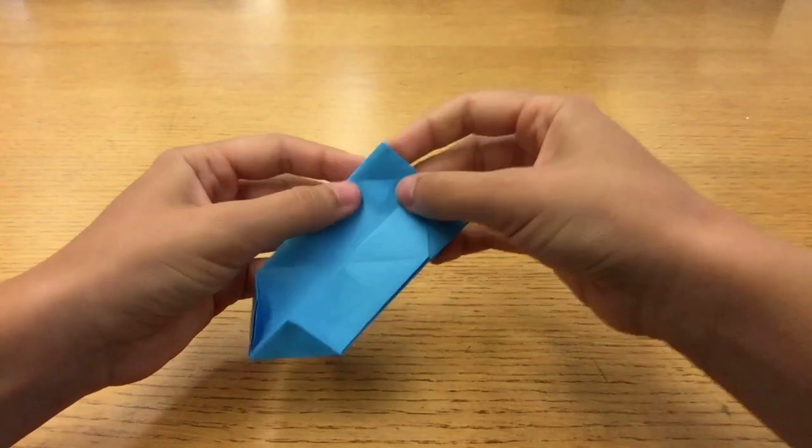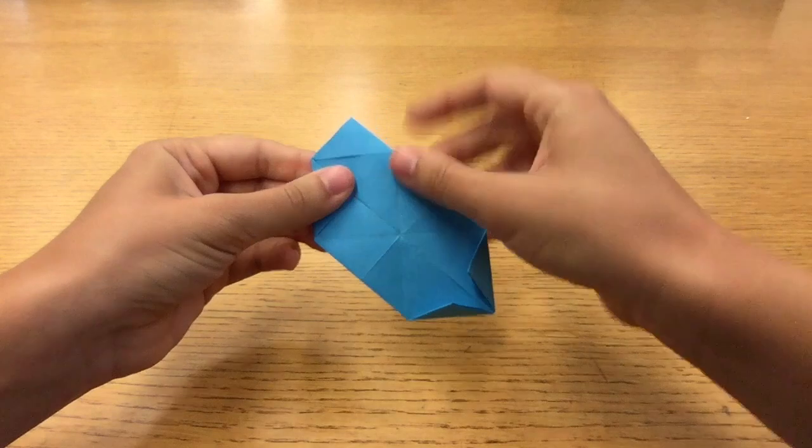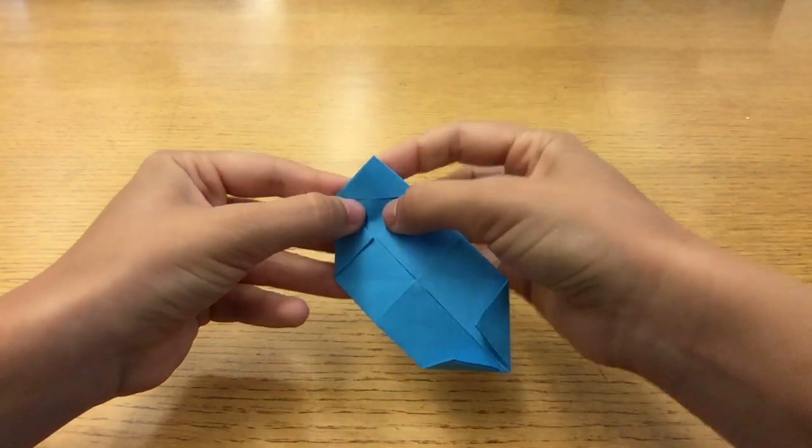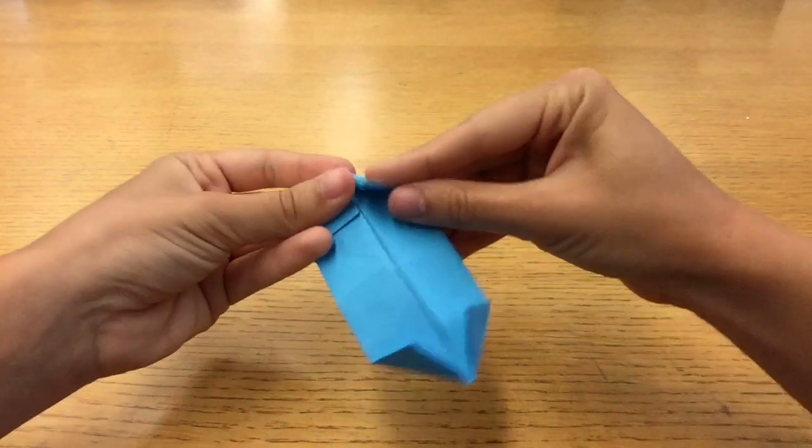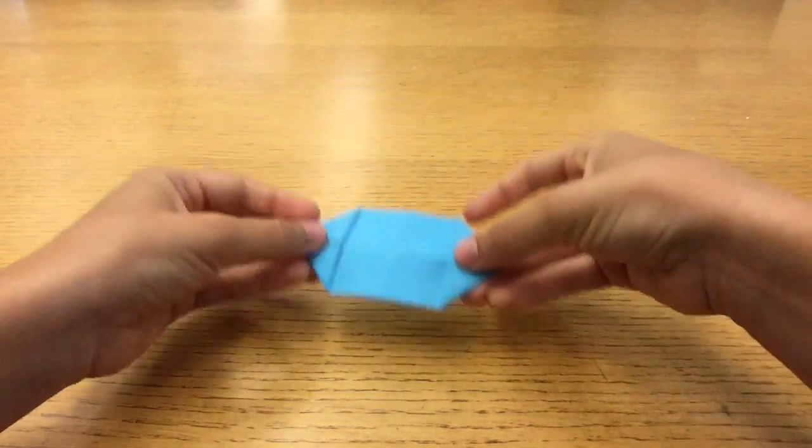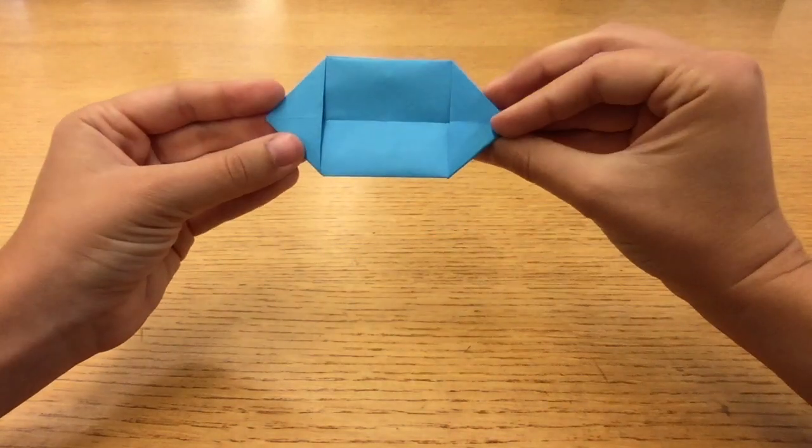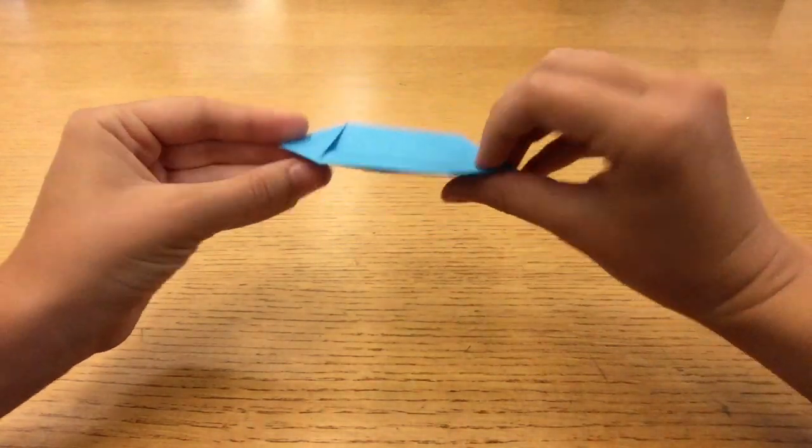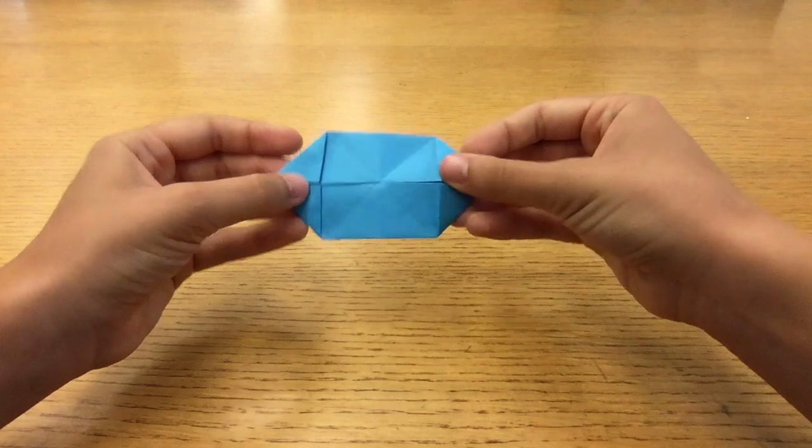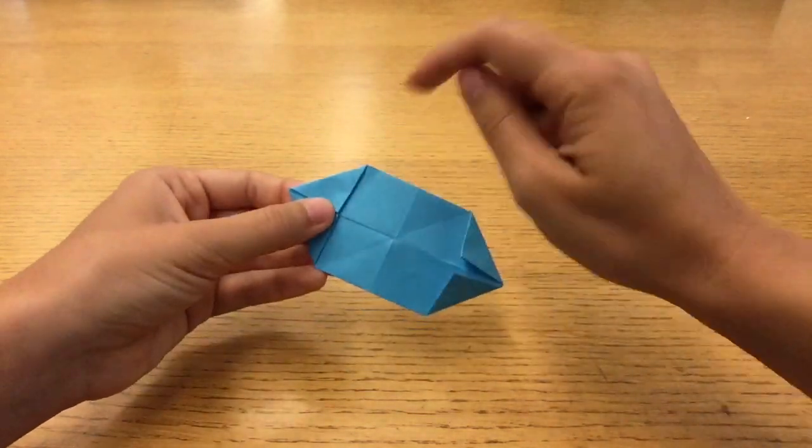Do the same thing on the other side, folding each corner into the center edge. Make sure they meet at the edge, but don't overlap. Don't mix up the top and the bottom. The bottom has two little pockets and the top has four flaps.